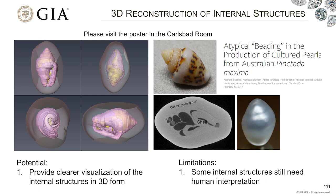Next, 3D reconstruction of the internal structures. Normally, a gemologist will look at a 2D radiographic image or a 2D CT slice to interpret the internal structure of the pearls. In GIA, we can combine CT slices with advanced computer software to reconstruct the internal structure of the pearl in 3D. Here is an example — we have a pearl being cultured using a small gastropod shell. This is an atypical bead-cultured pearl project done by Ken and our colleagues. Here is the 2D CT slice showing a shell structure inside. We can select the shell structure in each CT slice and reconstruct it into a 3D picture, which gives you very detailed orientation and shape of the internal structure without needing to cut the pearl open.